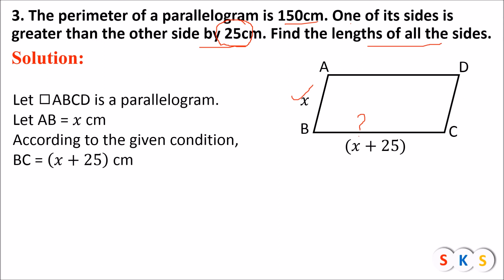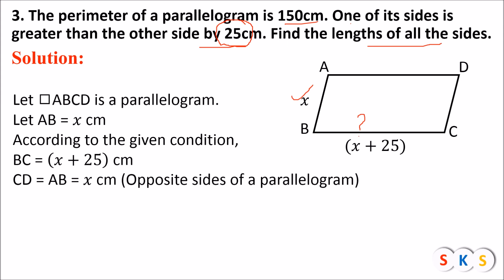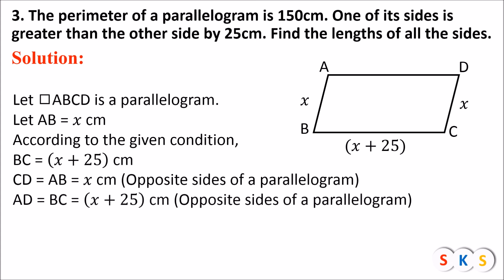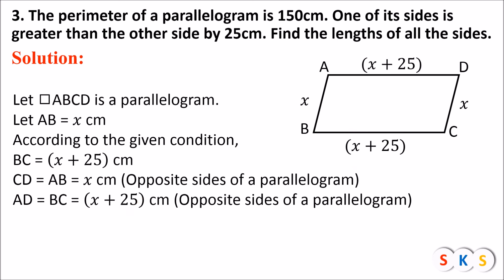Now, AB and CD are equal because they are opposite sides of a parallelogram. Therefore, AB and CD both have length x centimeters. Similarly, the remaining two sides AD and BC are also opposite sides of a parallelogram, so they are equal. BC equals x plus 25, so AD will also be x plus 25 centimeters.